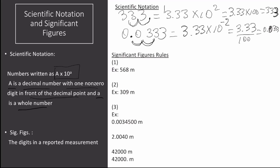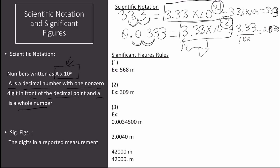Let's check the scientific notation of these answers. The form of the scientific notation requires that big A is a decimal number with one non-zero digit in front of the decimal point. That non-zero digit in front of the decimal point is 3, and the decimal number is 3.33, which is fine. And little a is a whole number — which in one case is negative 2, and in the other case is 2.